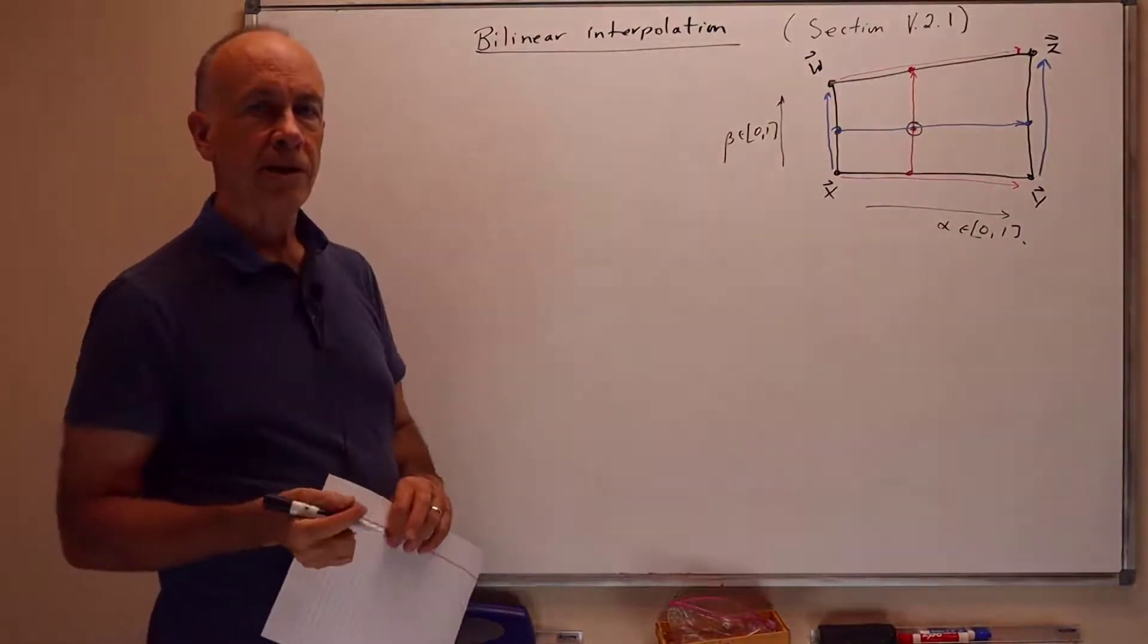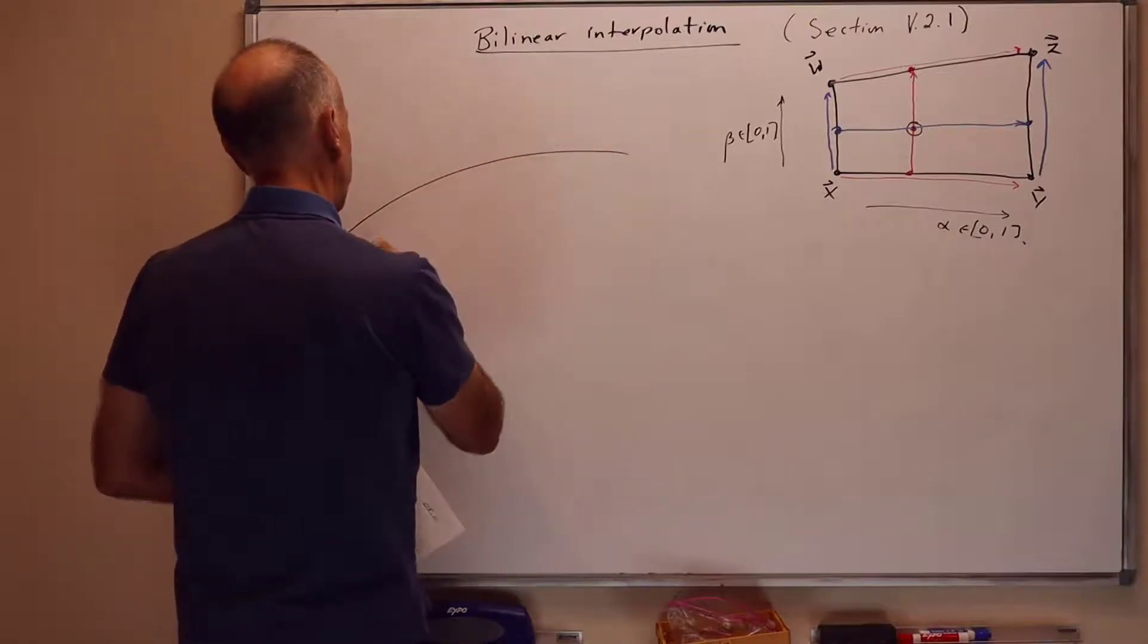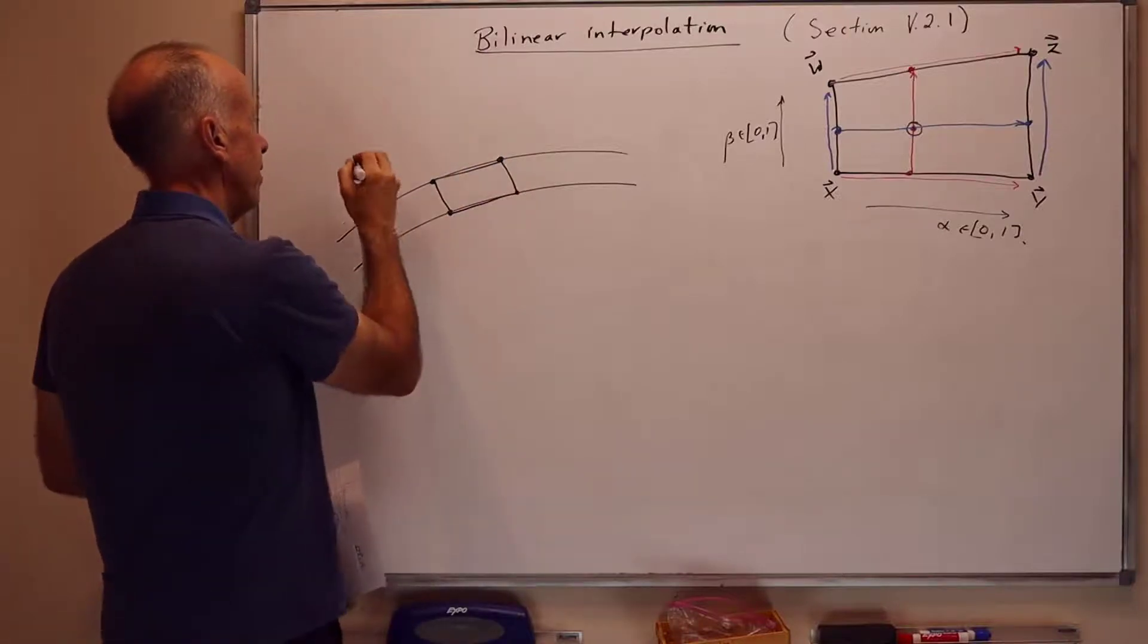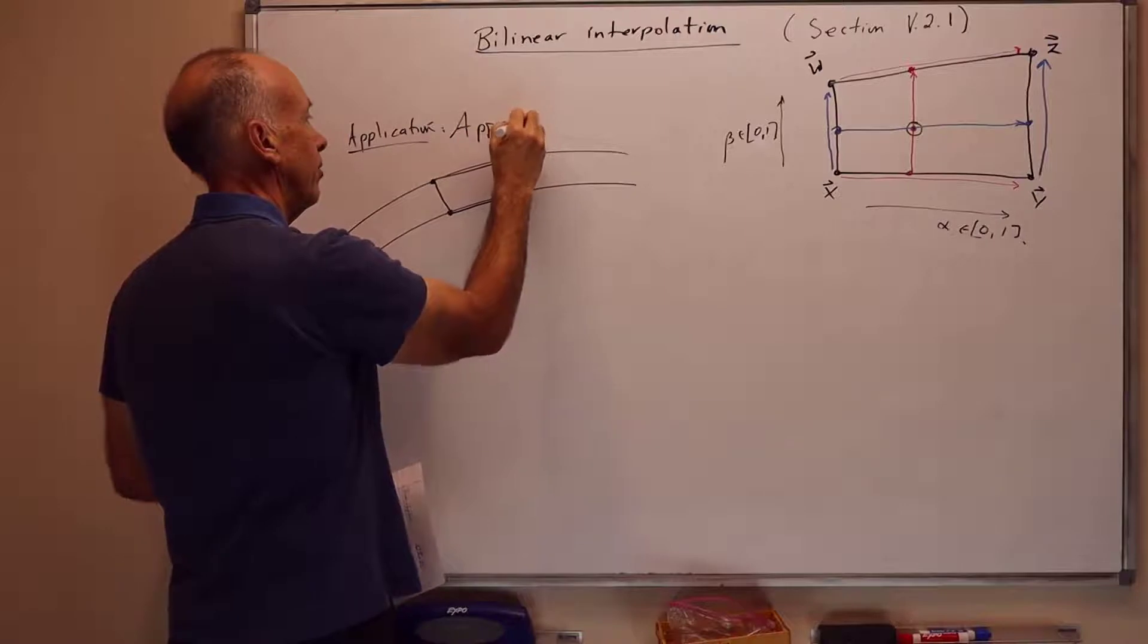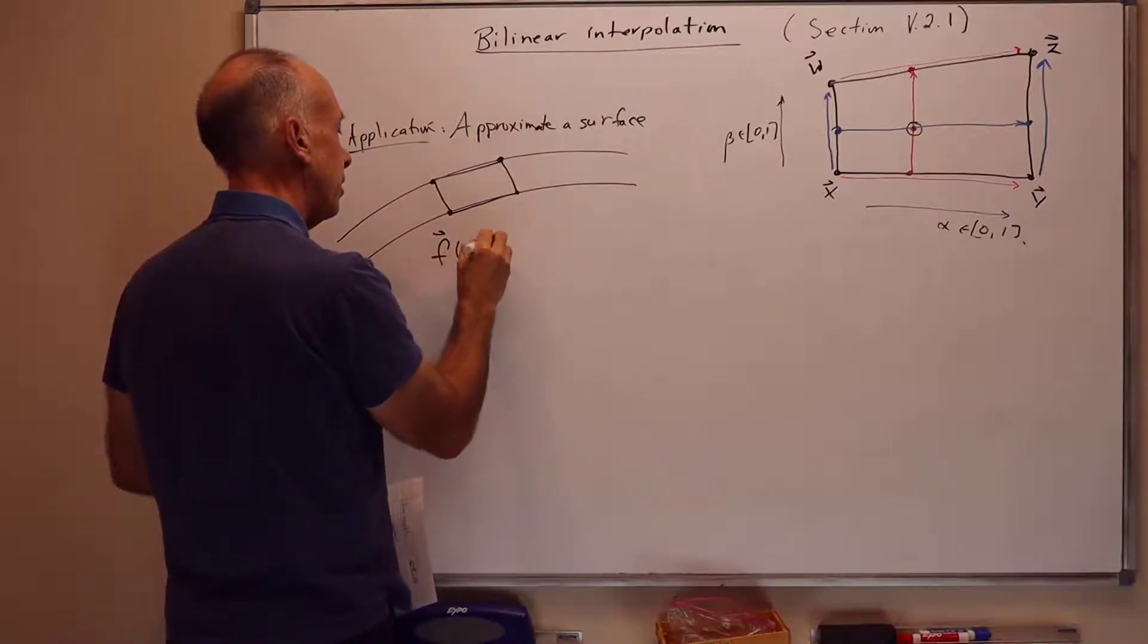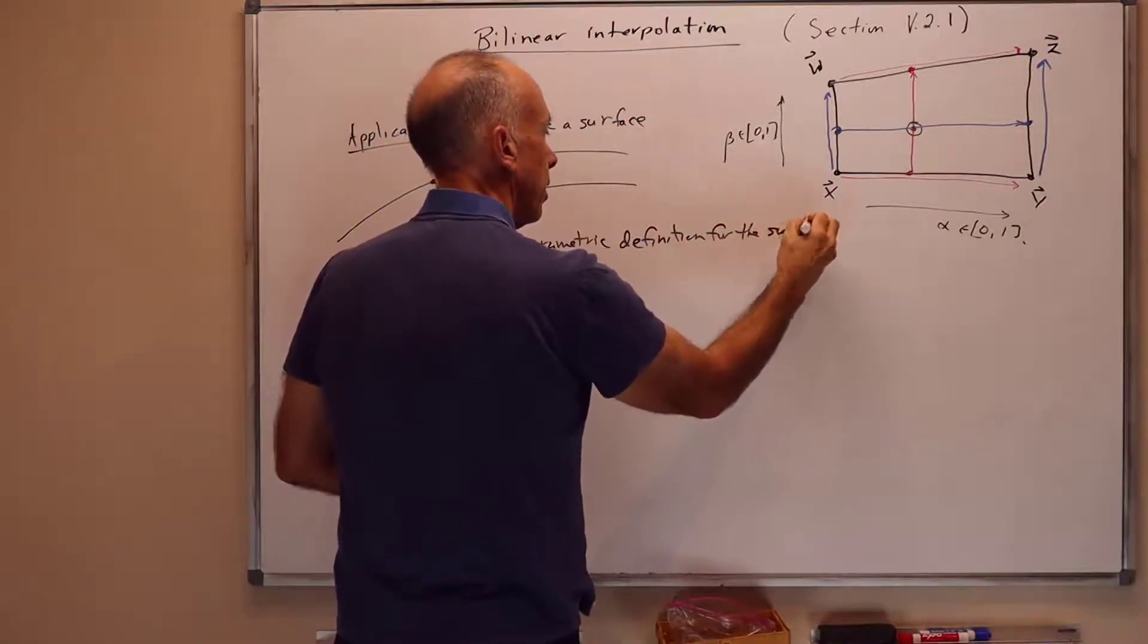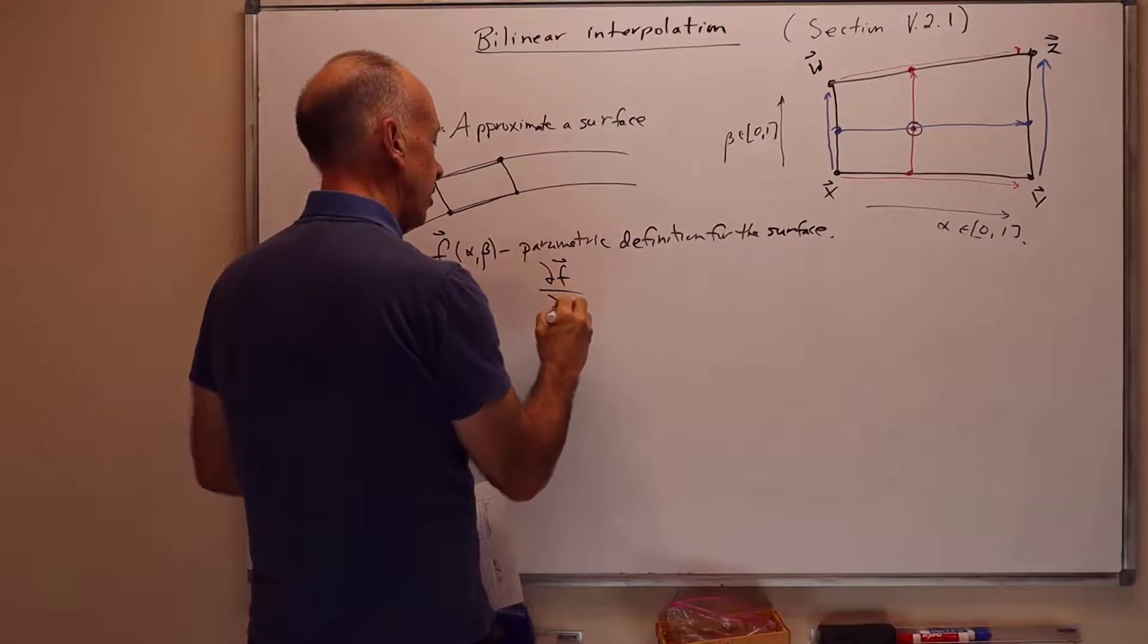So there's a couple typical applications for this. One application is when you're modeling some surface. Perhaps you're modeling a curved path of some type. So you have a curved path and you just approximate it by a series of rectangles and bilinearly interpolate. So that would be one application here. So application one is to approximate some curved surface. In this case, f of alpha beta is a parametric equation for the surface. It's a parametric definition for the surface. In this case, we probably need to know things like normals for f.